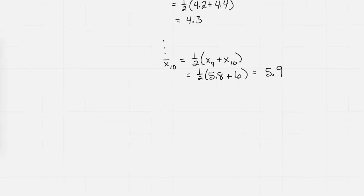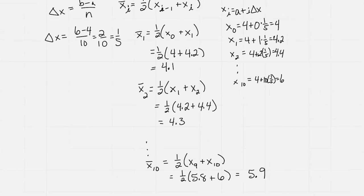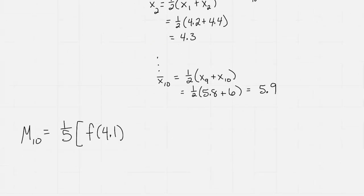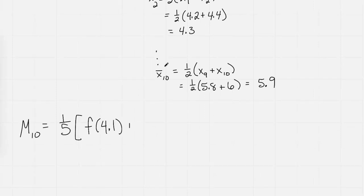Using our midpoint rule, so M sub 10 is going to be equal to - it's just delta x, so 1 fifth, times the brackets of f of 4.1, because that's our x bar sub 1. Let's double check, make sure I wrote it down. Yep, there, it's my x bar sub 1, so there's the 4.1 plus f of 4.3 plus, and I'm going to just do dot, dot, dot, all the way to my f of 5.9.